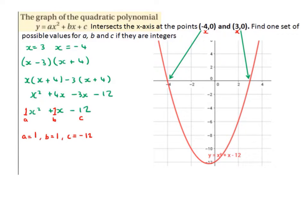Then we can multiply out the brackets. Bringing down the x, sticking on the (x + 4). Bringing down the -3, sticking on the (x + 4). x by x is x squared, x by 4 is 4x, -3 by x is -3x, -3 by 4 is -12.